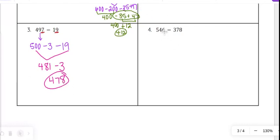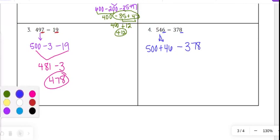And then on number four, 546 minus 378. With this one, if I try to do my places and I subtract 6 minus 8, or 4 minus 7, I'm going to get negatives, which means I'm going to have to regroup and borrow and whatnot. So I might think of this one instead. I might break that 546 into 500 plus 46, and then I still have minus 378.